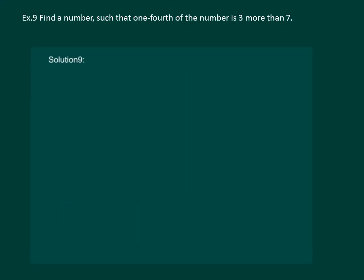Let us read the question: find a number such that one fourth of the number is 3 more than 7. First, let us assume that the required number is y. One fourth of the number means y by 4. If it is 3 more than 7, that means y by 4 minus 7 should give us 3.